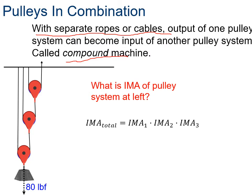Our total IMA in this case is 2, because we've got a movable pulley which is always IMA of 2, times 2 again, times 2 again. So our IMA ends up being 8. Our total IMA is 8. What that means is that for an 80-pound weight, I only need 10 pounds of force to lift up an 80-pound weight. On the other hand, though, I'm going to have to pull it much farther. I'm going to have to pull it eight times as far as the actual rope gets moved up here.